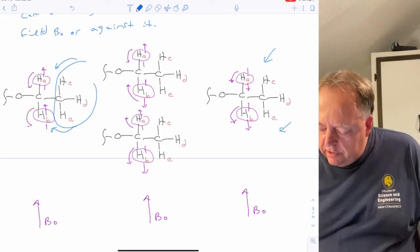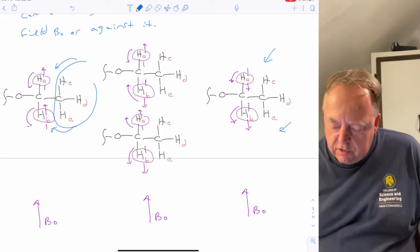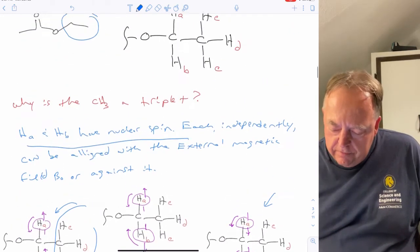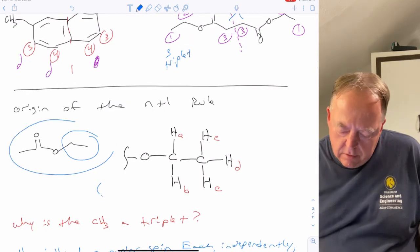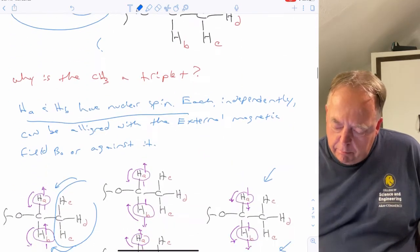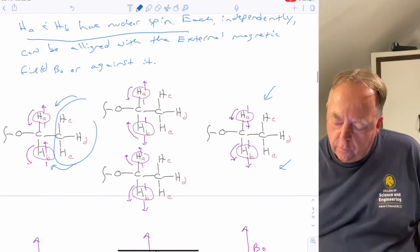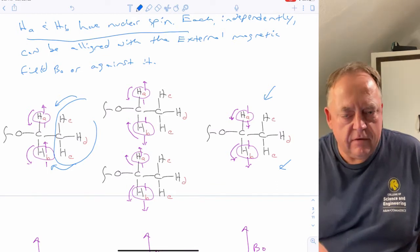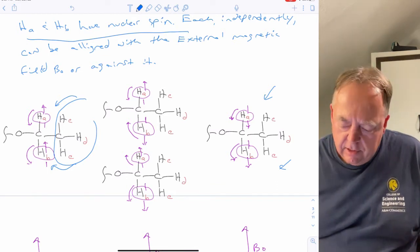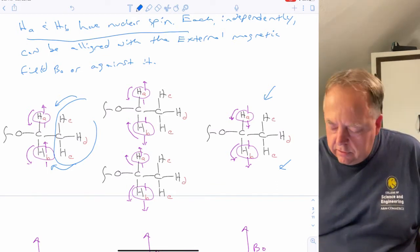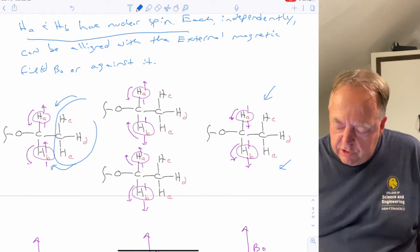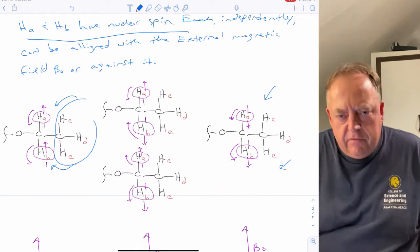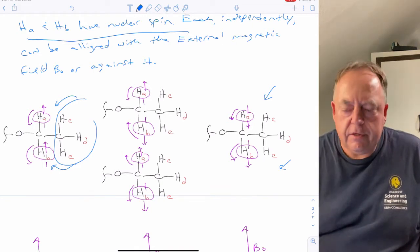Since C, D, and E are close enough in space to feel these magnetic fields, depending on which way hydrogens A and B are spinning, C, D, and E experience different magnetic fields around them. So they require slightly different energy to do a spin flip. The ethyl group CH2-CH3 basically gives four different spin-state combinations.